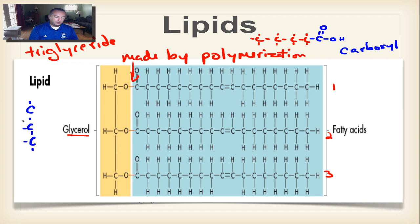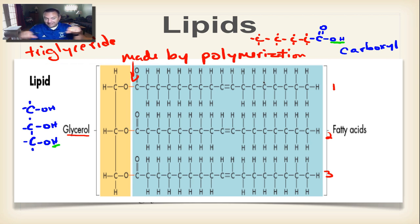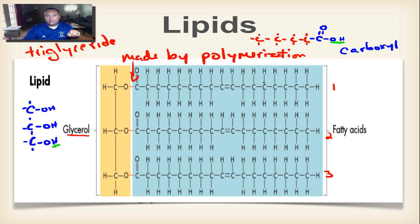Glycerol has three carbons with hydrogens and OH groups — all alcohols have OH groups. In dehydration synthesis, you use the H from one molecule and the OH from the other, pull out a water molecule, and link the fatty acid to the glycerol. When you burn fat — say, on a treadmill — that water is put back, the fatty acid breaks off the glycerol, and you've lost some fat.